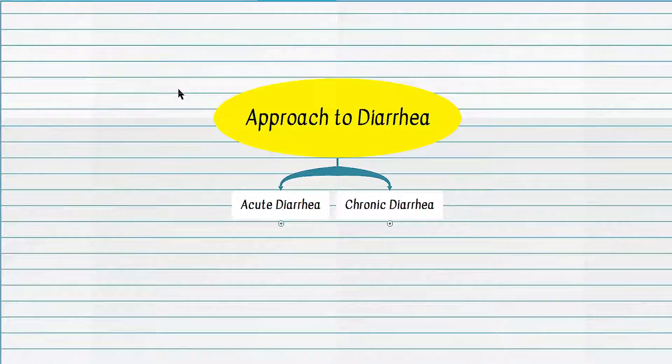In this episode, we'll discuss an algorithmic approach to diarrhea. When you have a patient with diarrhea, the first decision point question is to figure out if diarrhea is acute or chronic. Acute diarrhea lasts less than two weeks, and chronic diarrhea lasts more than four weeks. There is also a sub-acute or persistent diarrhea that lasts beyond two weeks but no longer than four weeks.